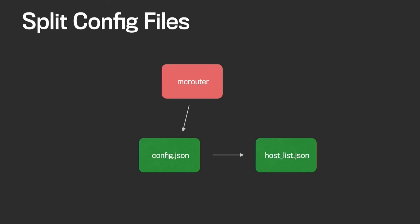For convenience, MacRouter also supports splitting up the config into different parts. For example, you might want to separate state configuration — like lists of servers which could be updated by a script automatically — from routing configuration which could be updated by a human manually. MacRouter will automatically track all of the configuration files.